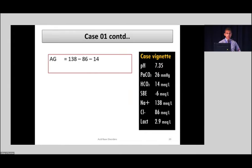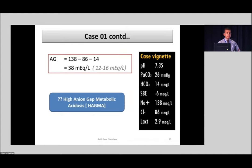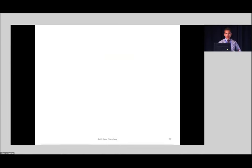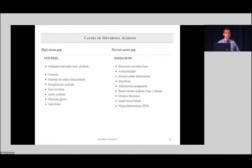Looking at the anion gap of the first case, it comes to 38, which is definitely more than the normal range of 12 to 16. There is a high anion gap metabolic acidosis. Does this answer our question? Can we work out the cause? Of course it's difficult because there are a number of causes and there may be mixed causes. You can use various mnemonics to remember the high anion gap and normal anion gap metabolic acidosis causes.